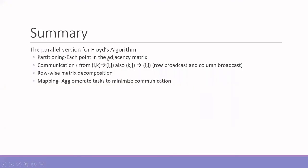We will summarize the entire slide here. We have seen the parallel version of Floyd's algorithm. We started with the partitioning. Each point in the adjacency matrix becomes the task here. Now, regarding communication, we know that to compute [i,j], we need the minimum value of [i,j] and the comparison of [i,k] plus [k,j]. So, we need to have a row broadcast and also a column broadcast. Finally, we have decided to go for row-wise matrix decomposition, since many of the programming languages choose row major decomposition.